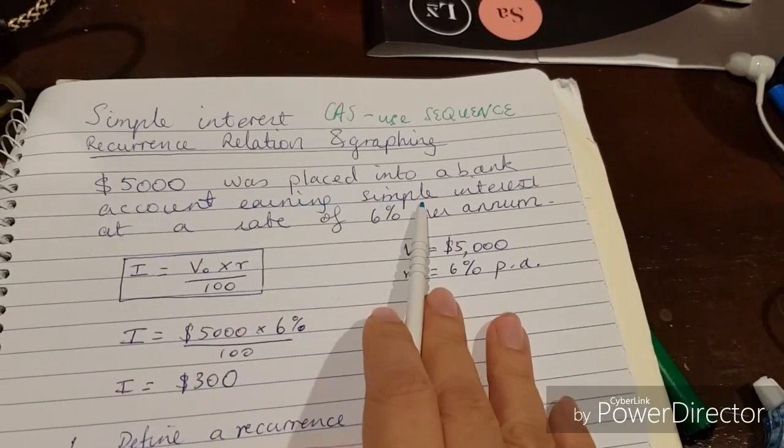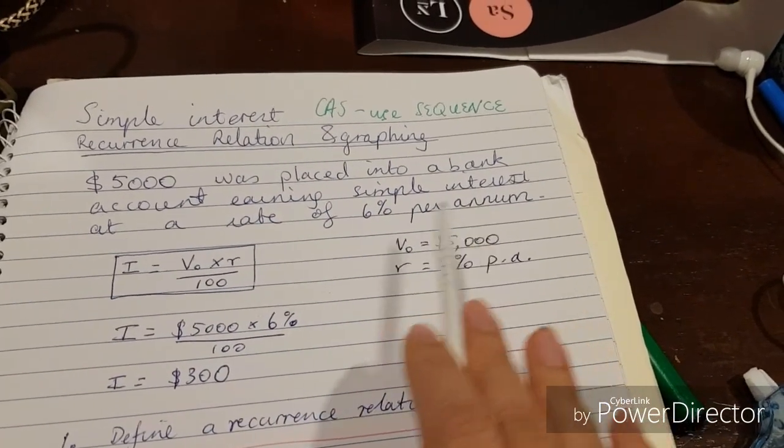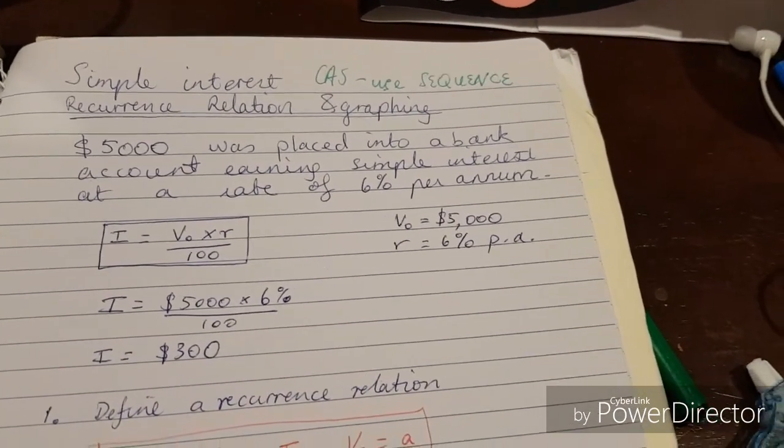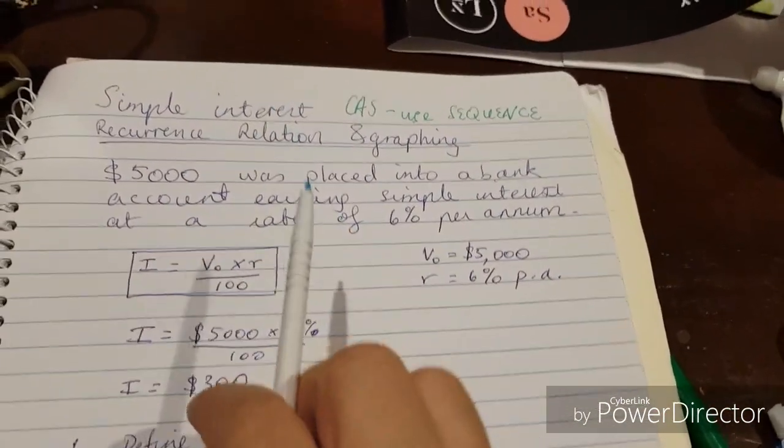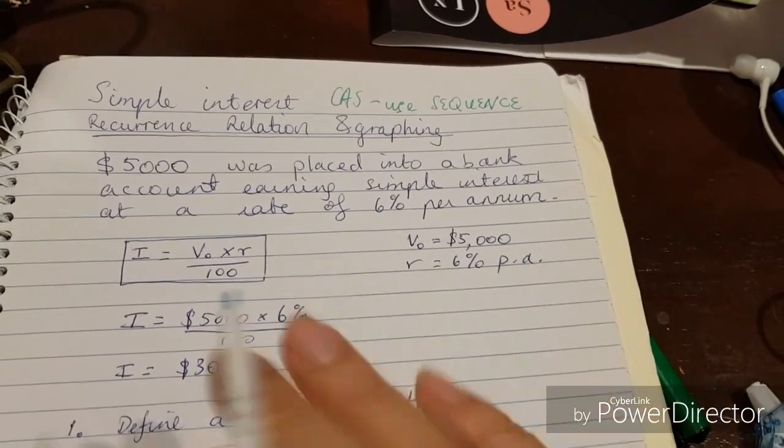$5,000 was placed into a bank account earning simple interest at a rate of six percent per annum. First, before we do anything else, we need to calculate how much interest was earned each year. Because it's simple interest, it's the same amount of interest earned each year. The amount of interest doesn't change.